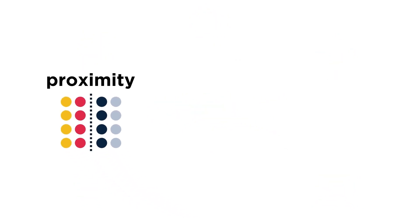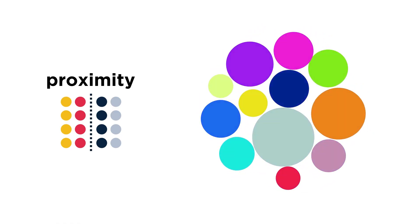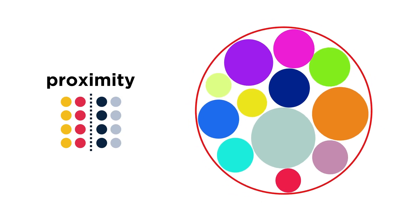The principle of proximity states that when objects are close together, the mind sees them as a single group or object. This happens even when the objects differ in shape, size, and color, even if they don't actually touch each other. As long as they are close to one another, the mind makes them one cohesive object.